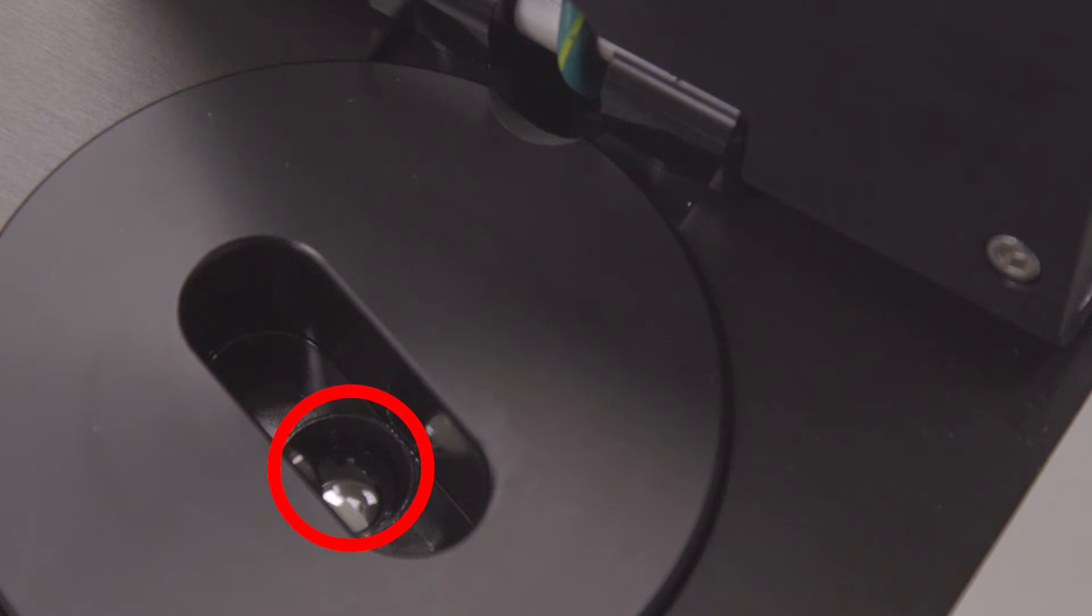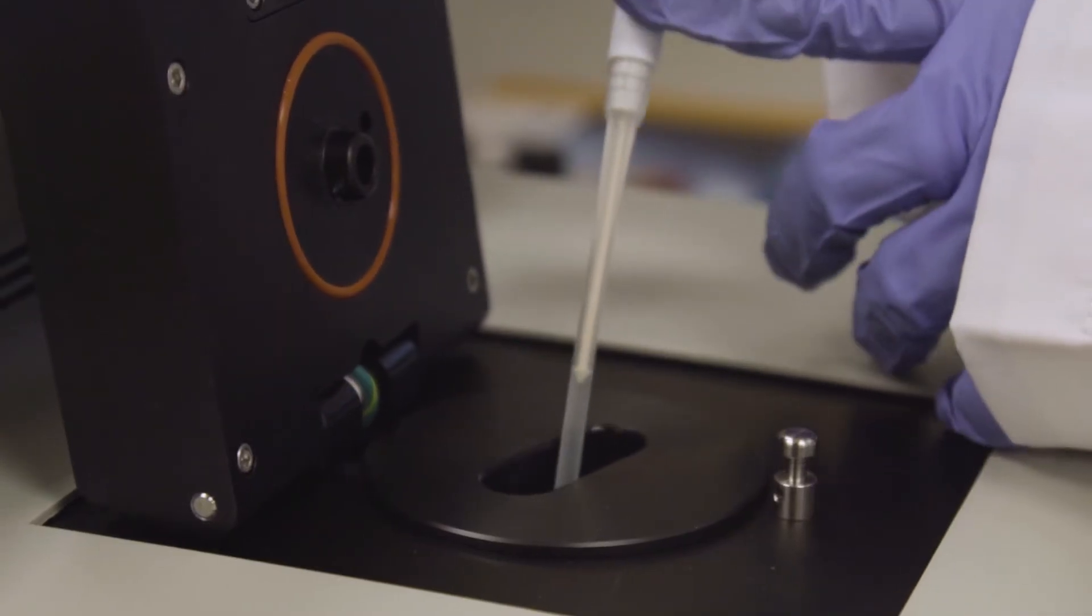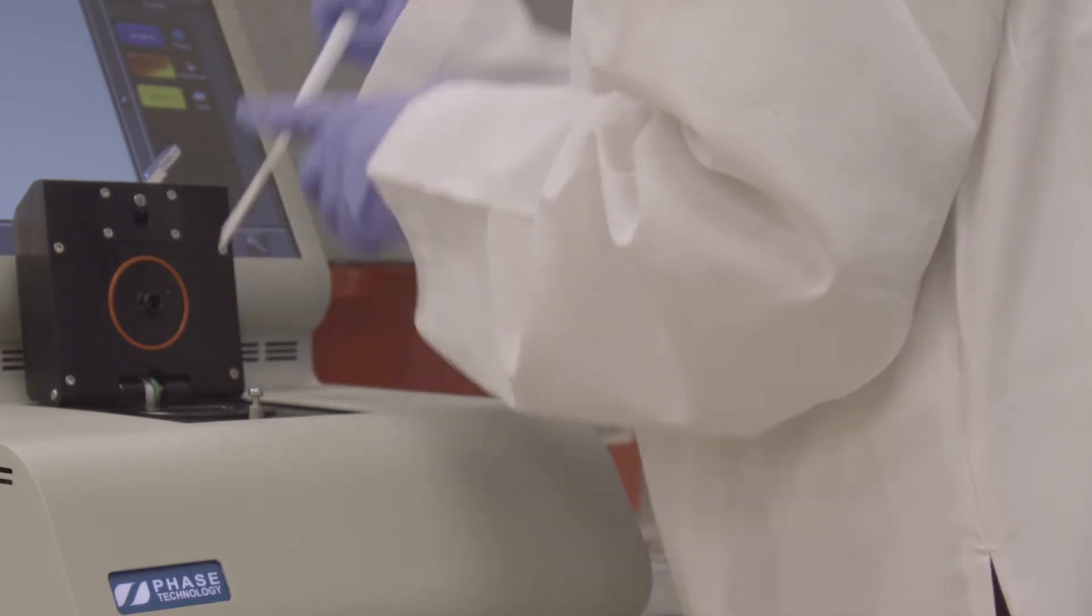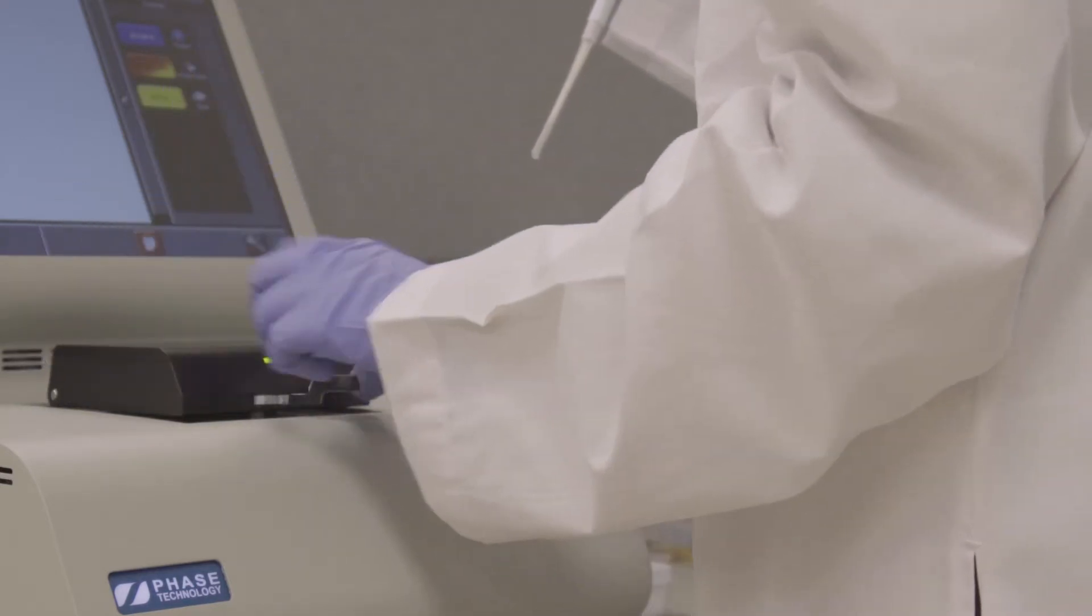Position the pipette tip above the sample cup inside the test chamber. Dispense the sample by pressing the plunger down to the first stop. To remove the pipette tip, press the plunger to the second stop.